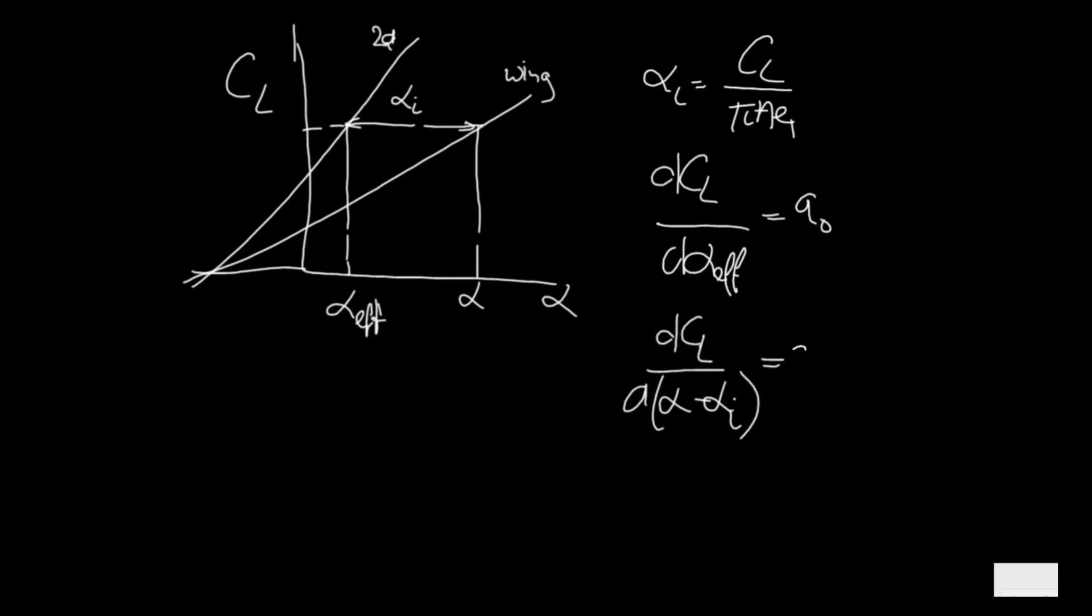And then if we integrate this equation here we get CL is a0 times alpha minus alpha_i plus a constant.